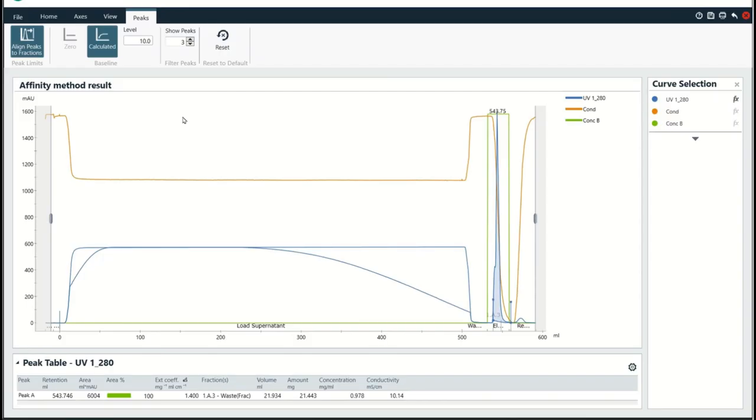Hi everyone. I did want to show you guys a result file from the method that we wrote together. This is an affinity method where we loaded a cell harvest sample. You can see we loaded about 500 mils on here exactly, which looked really good. This is where loading ended. And then after that, the UV went down a bit and then this is the fraction that we collected, right? So we'll just zoom in on that real fast.